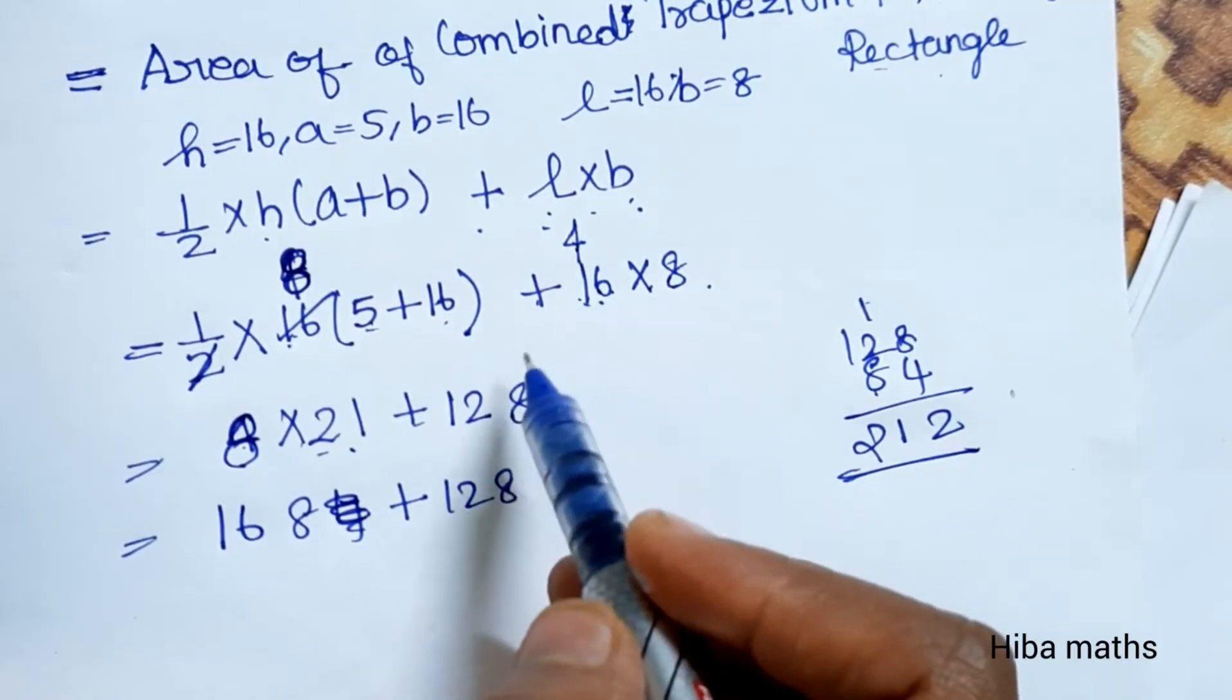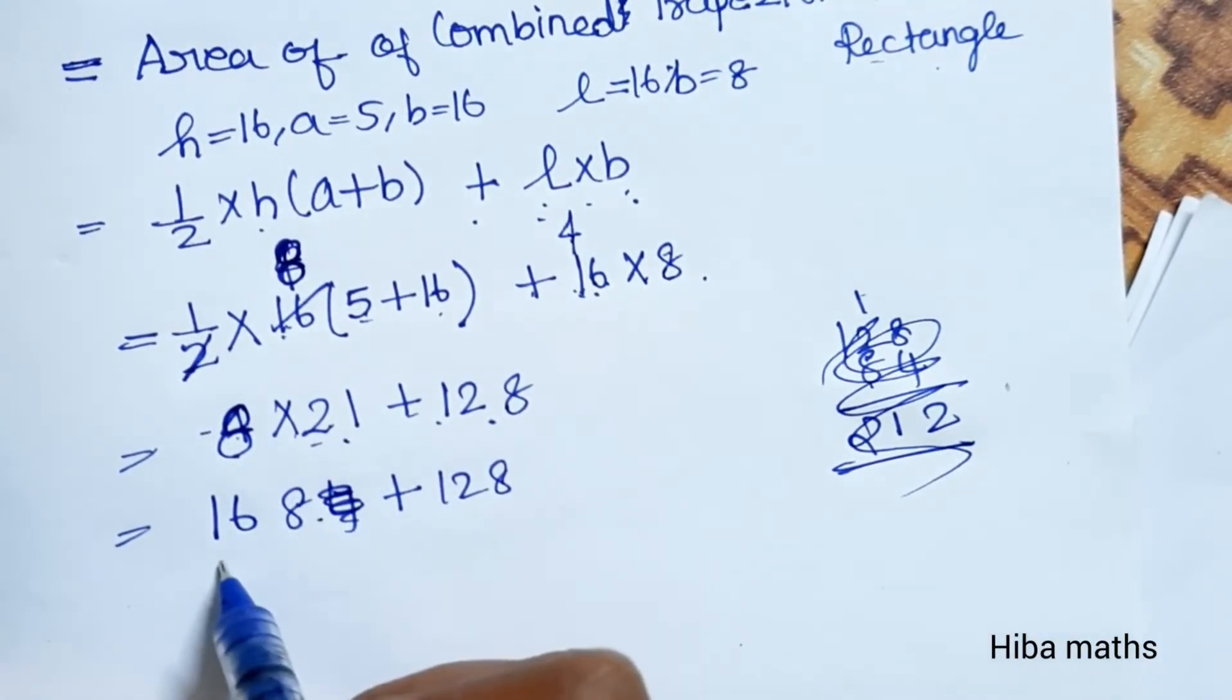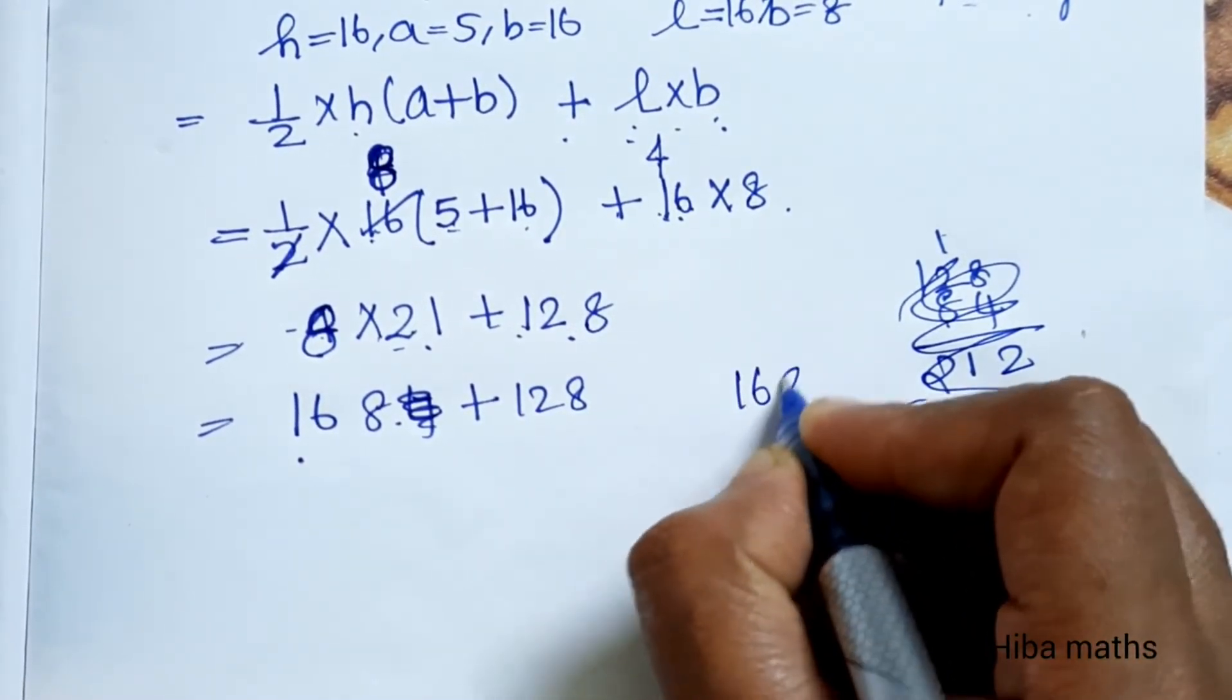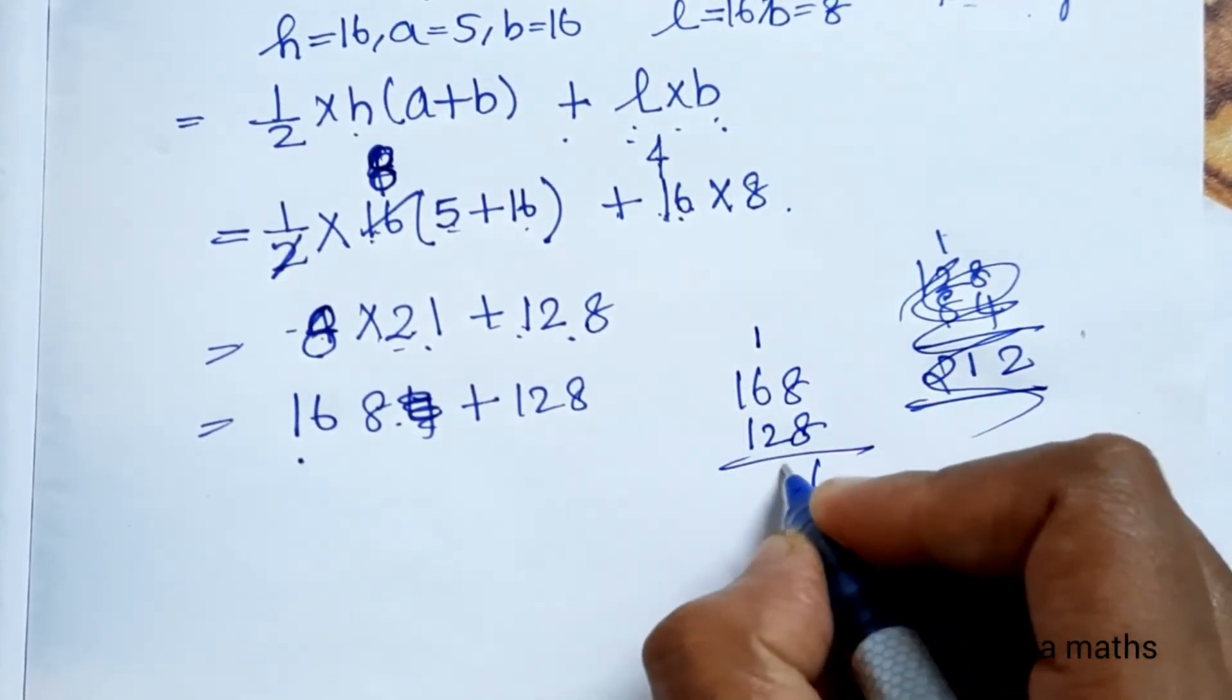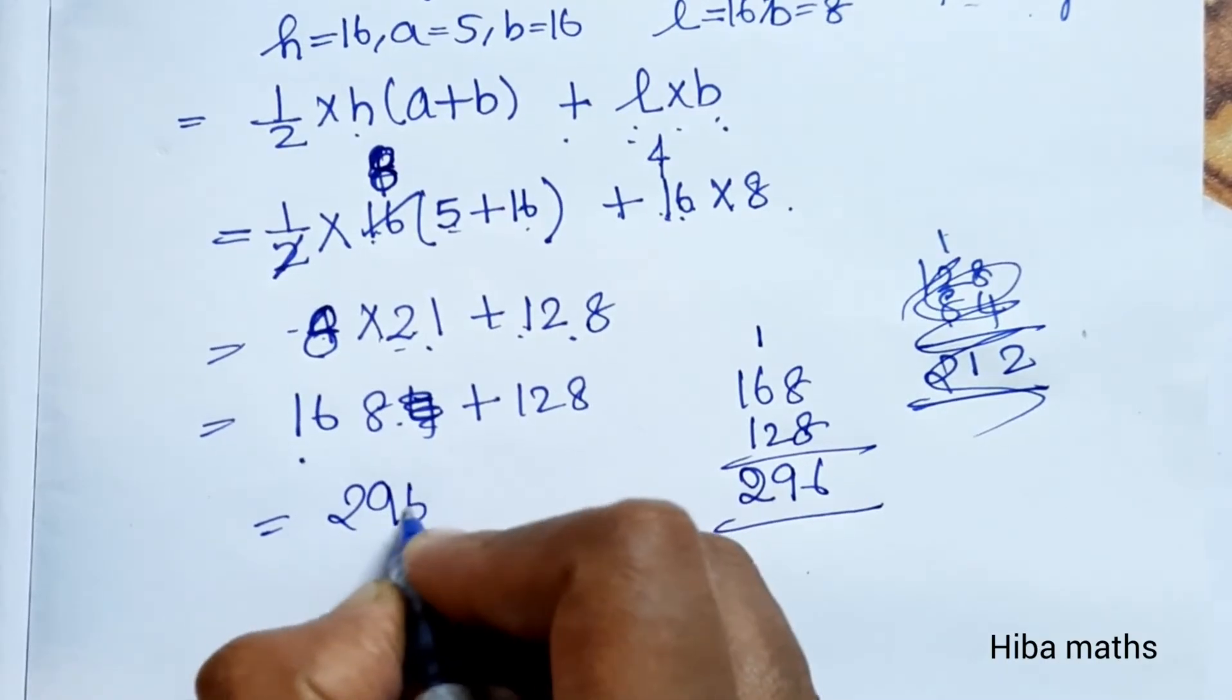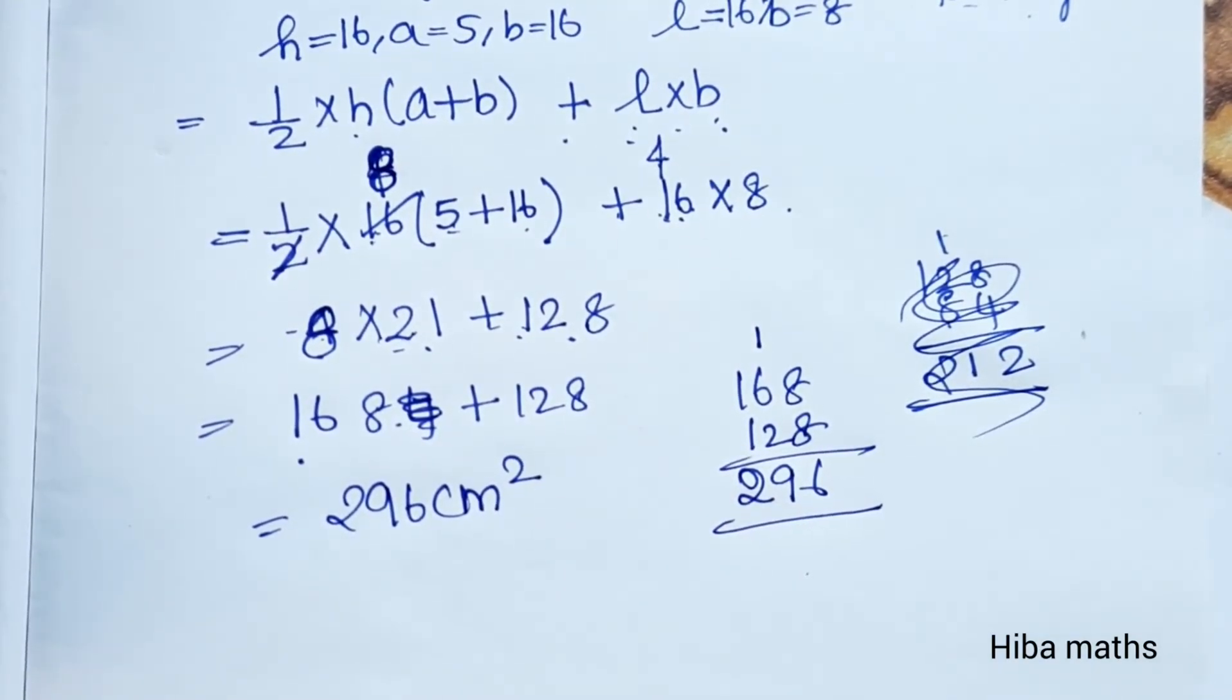8 times 1 is 8, 8 times 2 is 16, so 8 times 21 equals 168. Adding 168 plus 128 gives us 296 cm² as the area of the invitation card.